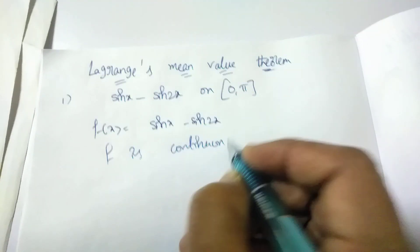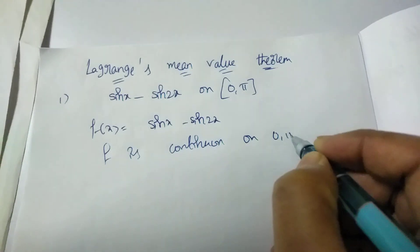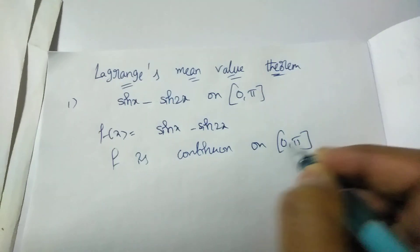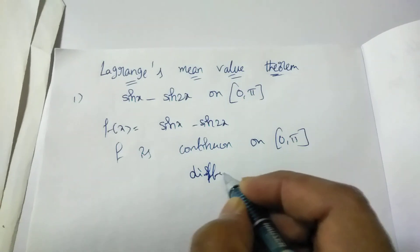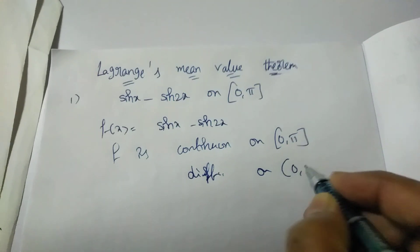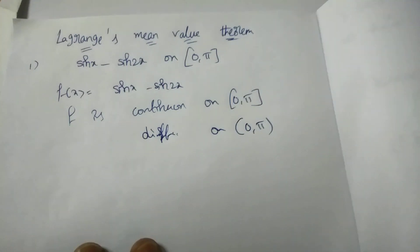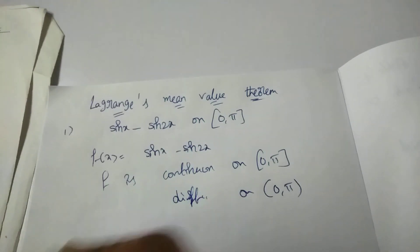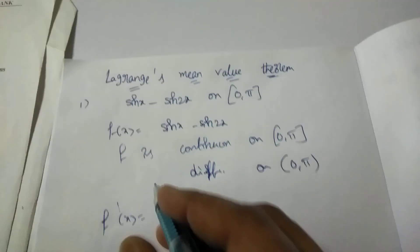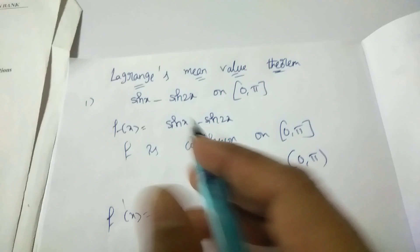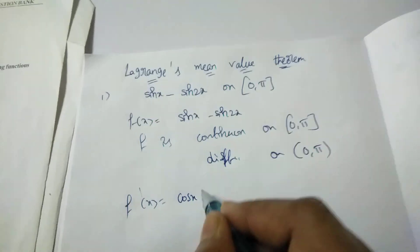f is a continuous function on the closed bracket [0, π]. f is also differentiable on the open bracket (0, π). These are the two conditions. Now find f'(x): the derivative of sin x is cos x, and the derivative of sin 2x is 2 cos 2x, so f'(x) = cos x − 2 cos 2x.